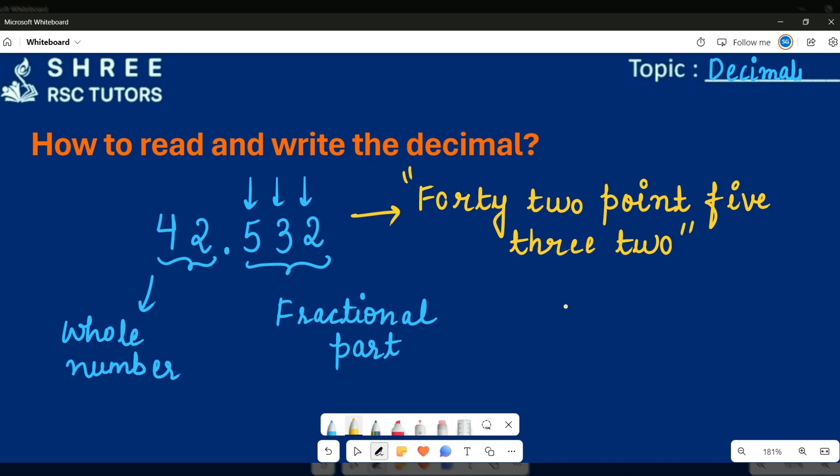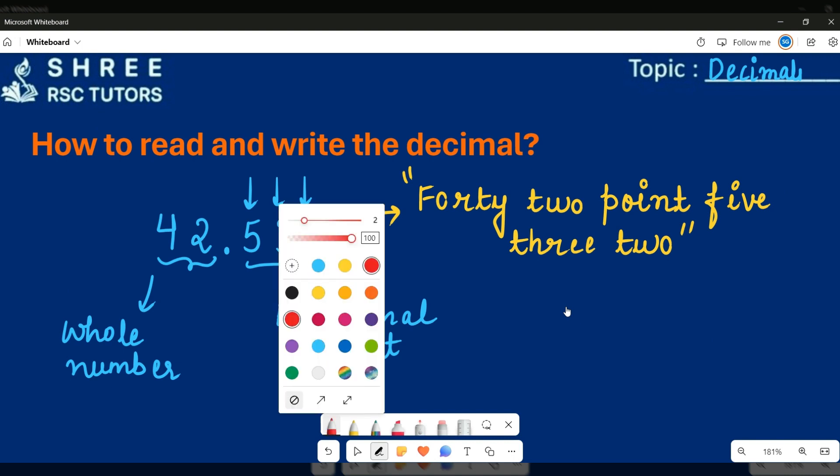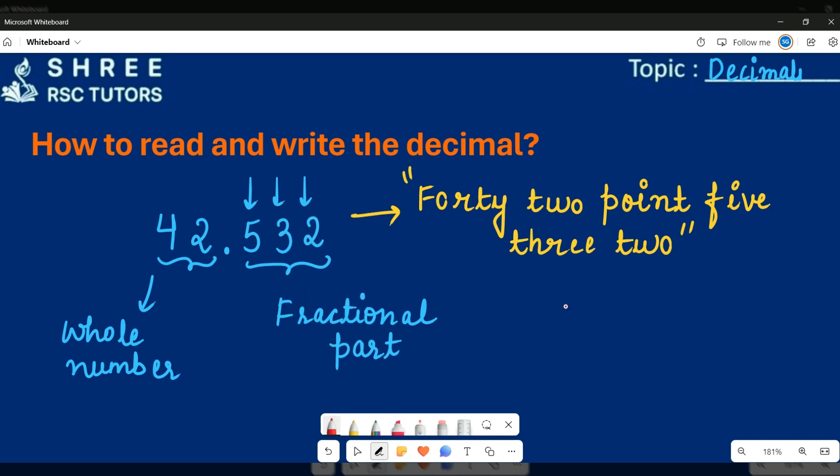So I'm giving you another question. Let's just try this question with me. For example, let's say if I have this number. So we will read it as 532.535 because this was the whole number and afterwards, these are just the decimal numbers.